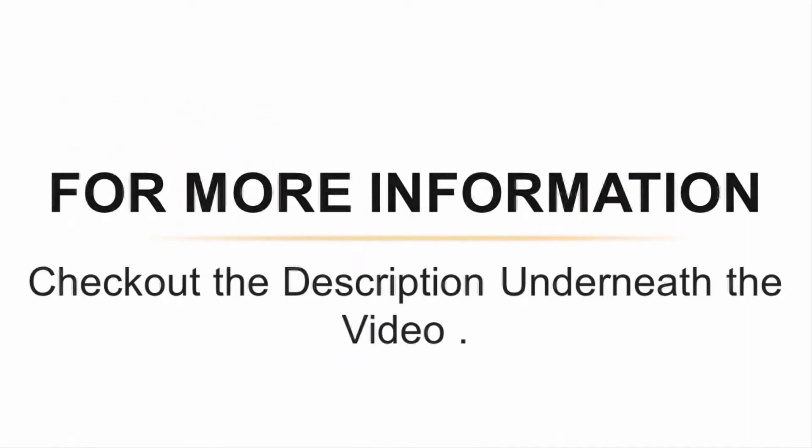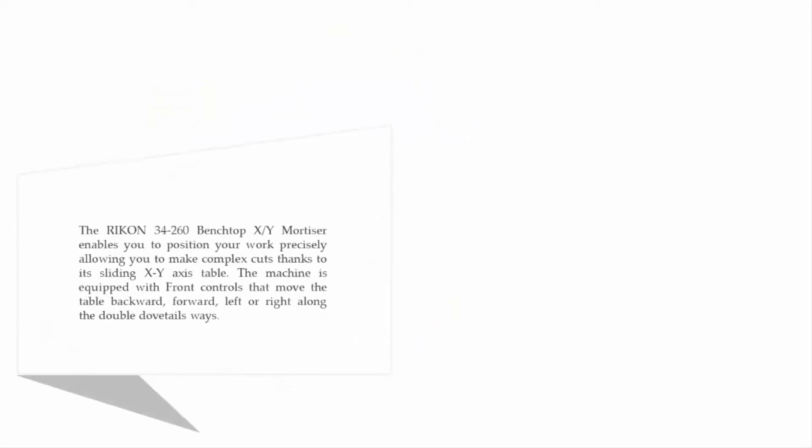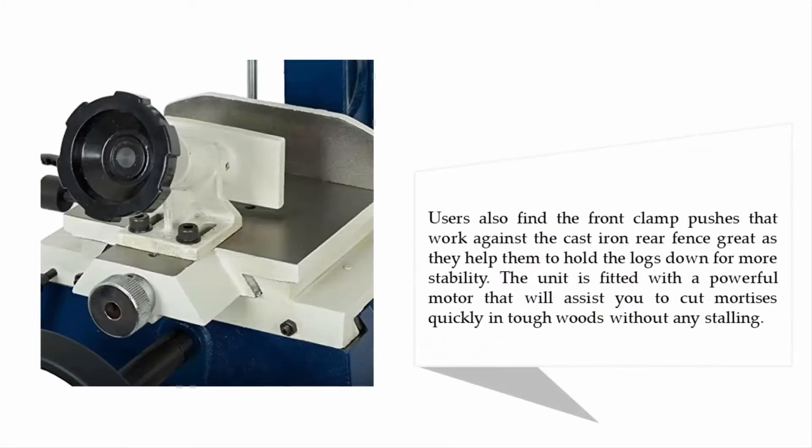Halfway through our list at number three: Rikon Power Tools 34-260 Benchtop XY Mortiser. This enables you to position your work precisely, allowing you to make complex cuts thanks to its sliding XY axis table. The machine is equipped with front controls that move the table backward, forward, left, or right along the double dovetail ways.